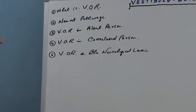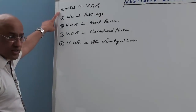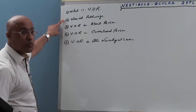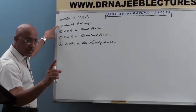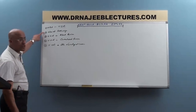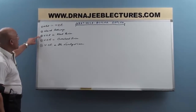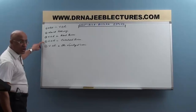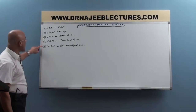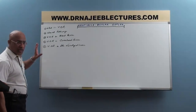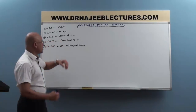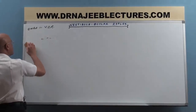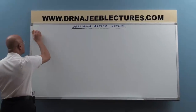We are going to talk about vestibulo-ocular reflex. First we will discuss what it is, then the neural pathways controlling this reflex activity, the role of VOR in an alert person, how VOR works in the comatose person, and then VOR in other neurological lesions. First, we answer: what is vestibulo-ocular reflex and why do we need it?